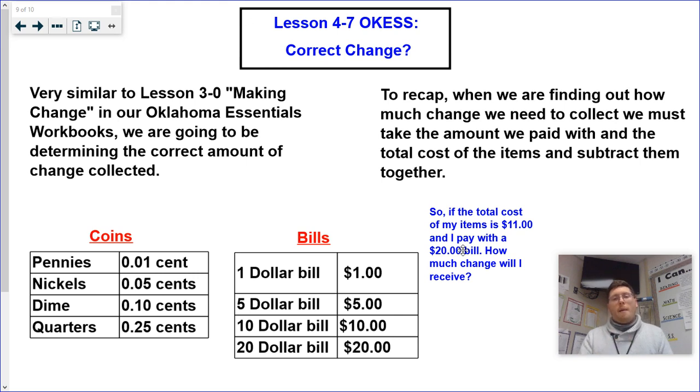So to recap, when we are finding out how much change we need to collect, we must take the amount we paid with—the money that we give to the cashier—and the total cost of the items. So how much all the items together cost.